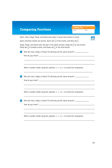It says Quinn, Nina, Diego, Paula, and Kiana were given four same-size burritos to share. Quinn and Nina shared one burrito. Quinn ate one-fourth of the burrito, and Nina ate two-fourths. Diego, Paula, and Kiana each ate part of the other burritos. Diego ate two-thirds of one burrito. Paula ate two-fifths of another burrito. And Kiana ate five-sixths of the third burrito. So there's a lot of kids eating lots of burritos, or portions of burritos.